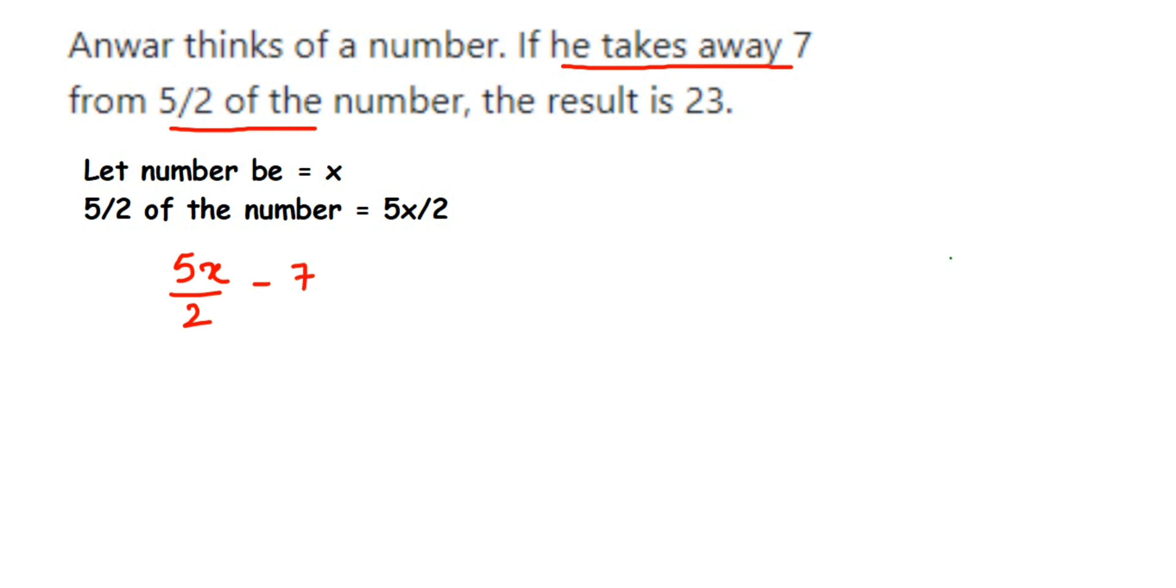So he is taking away 7, then the result is equal to 23. So this is the equation we have got. We have to find the value of x. First I'm going to transpose minus 7 to the other side. Minus when transposed to the other side becomes addition, so 5x upon 2 is equal to 23 plus 7.